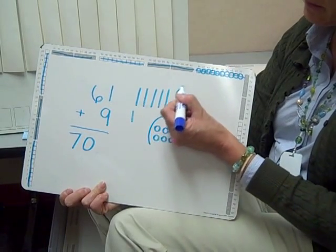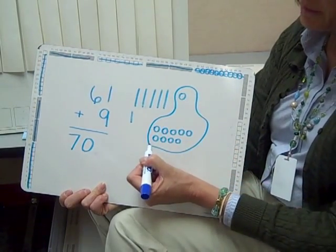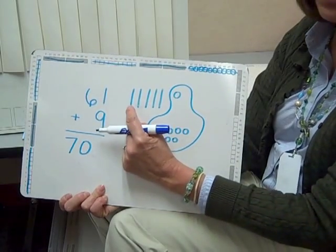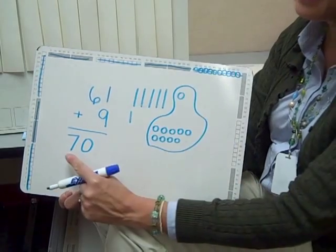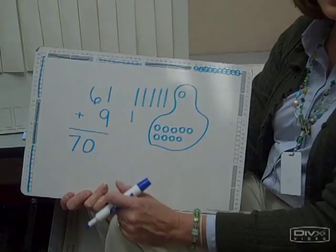They might notice if they moved this one down into the empty spot that they would have two rows of five to make ten, so they would circle their new ten. Then they could prove: I have six tens and one more new ten. I have seven tens or 70.